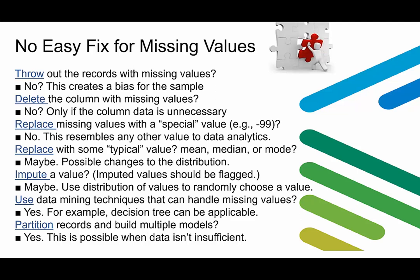There are several solutions. We can throw out records with missing values, though this creates a bias and we must consider whether values are missing at random or not. We can delete the column with missing values if the data is unnecessary, but otherwise it's inapplicable. We can replace the missing value with a special value like negative 99, though this is usually avoided as it resembles any other value to analytics. We can replace with typical values like mean, median, or mode, but this may change the distribution. We can also use imputed values, which should be flagged; using the distribution of values to randomly choose a replacement is generally suggested.